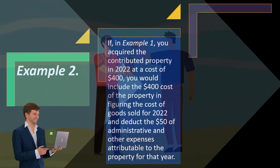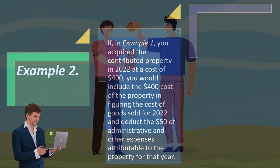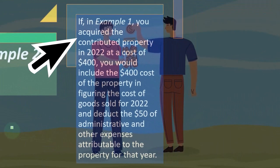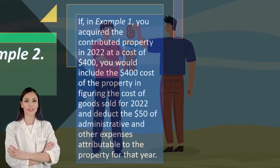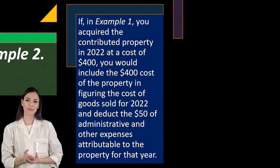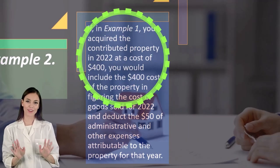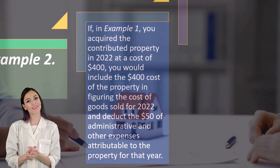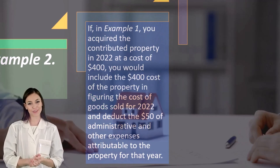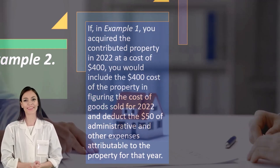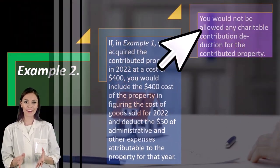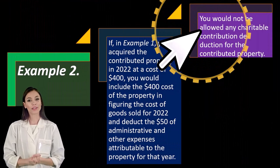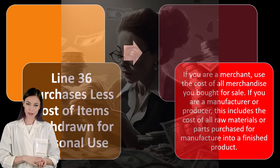Example two: if in example one you acquired the contributed property in 2022 at a cost of $400, you would increase the $400 cost of the property in figuring the cost of goods sold for 2022, and deduct the $50 of administration and other expenses attributable to the property for that year. You would not be allowed a charitable contribution deduction for the contributed property.